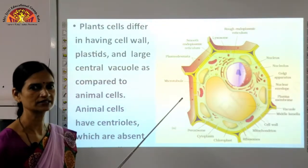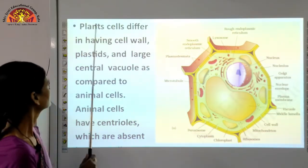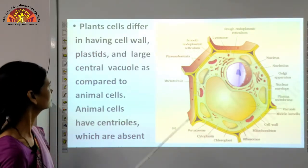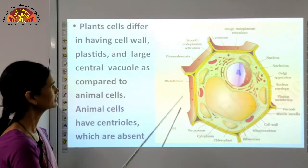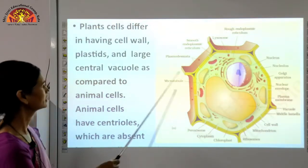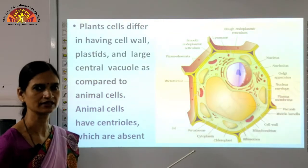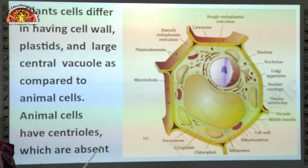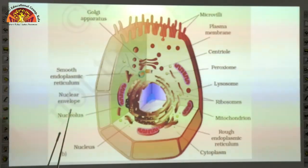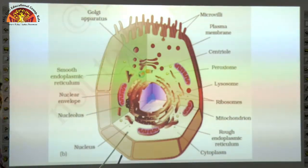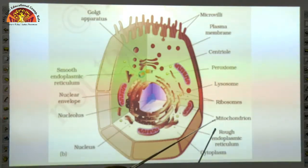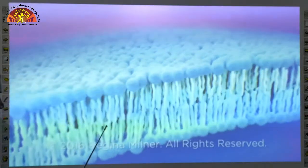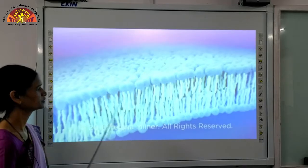Now we will see the two types of eukaryotic cells — plant cell and animal cell — and compare them. The main difference is that plastids and chloroplasts are present in plant cells but not in animal cells. Cell wall is present in plant cells but absent in animal cells. Plant cells have a large vacuole, whereas animal cells have only a small vacuole if any. Animal cells have centrioles, which are absent in plant cells. Other organelles like mitochondria, ribosomes, lysosomes, and endoplasmic reticulum are present in both.